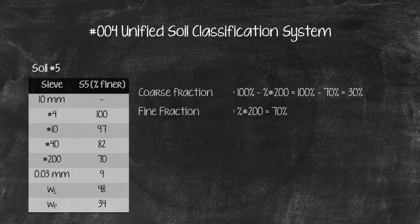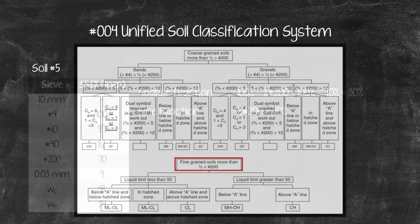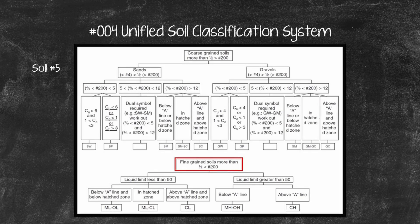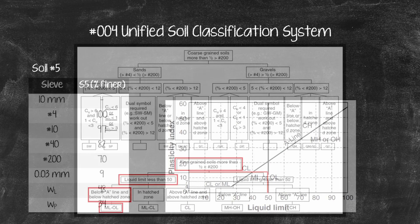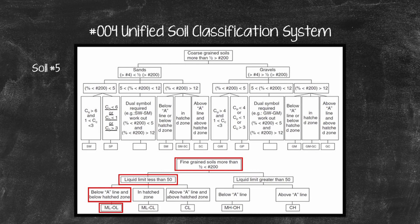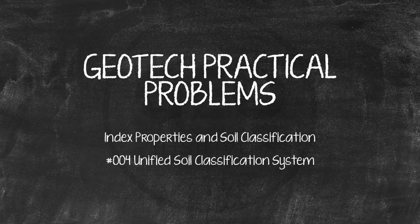Soil No. 5: The fine fraction is larger than the coarse fraction, so it is a fine-grained soil. Checking the plasticity chart with the plasticity index and liquid limit, Soil No. 5 is classified as ML. Thank you for watching Geotech Practical Problems Number 4 — Unified Soil Classification System. See you in the next video.